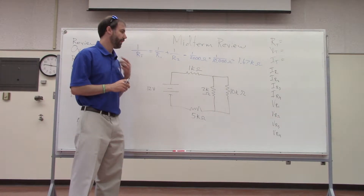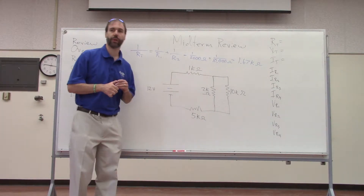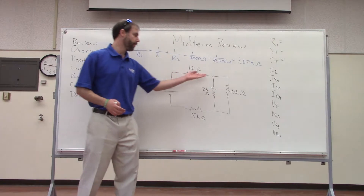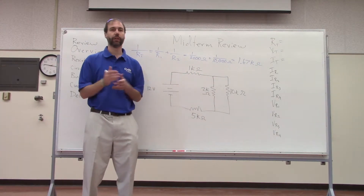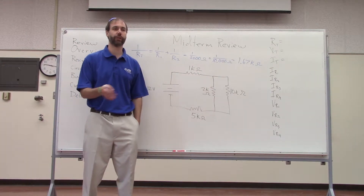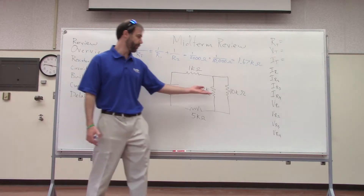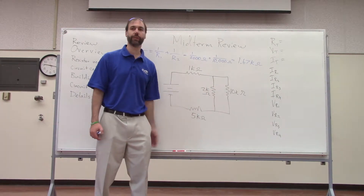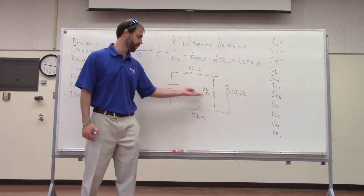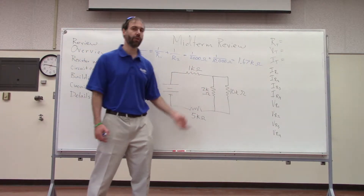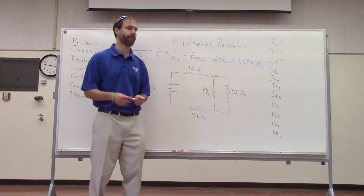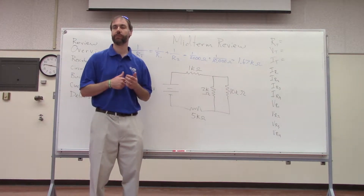There's a gut check we can use here. When you have two resistors in parallel, there are two paths for electricity to flow, so it's easier than flowing down any single path. The total resistance is always less than the smallest existing resistor. Here the smallest was 2 kilohms, and the result is 1.67 kilohms — so that passes our gut check.